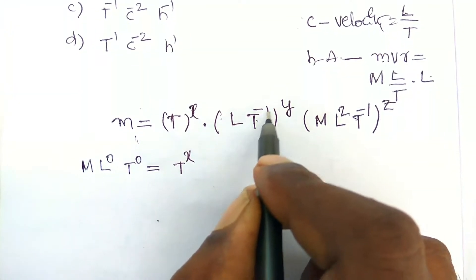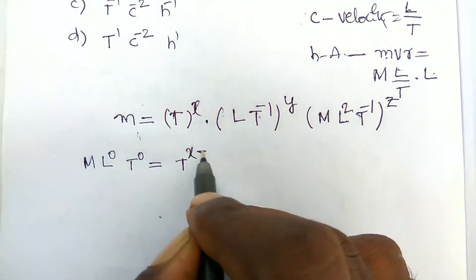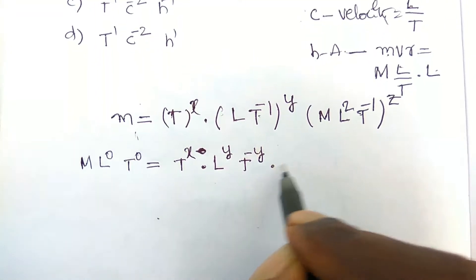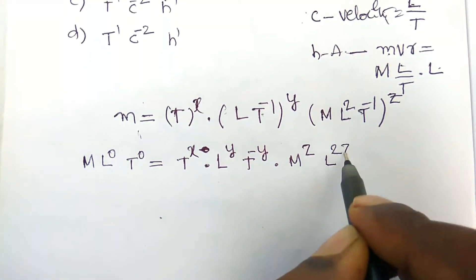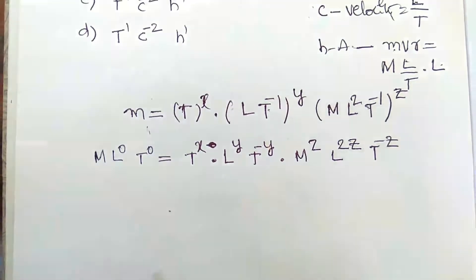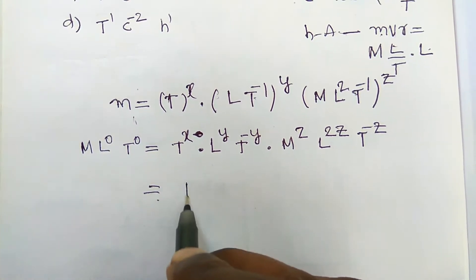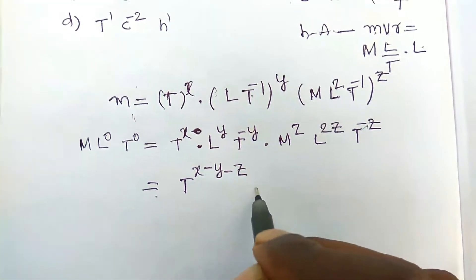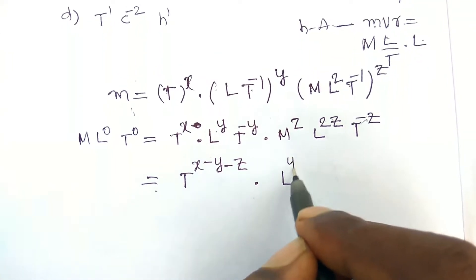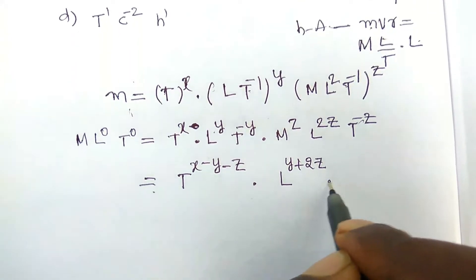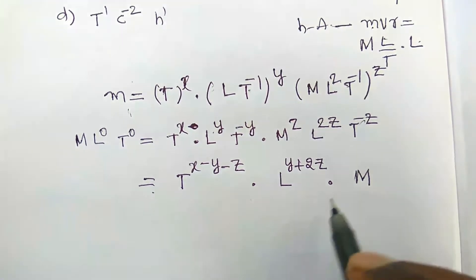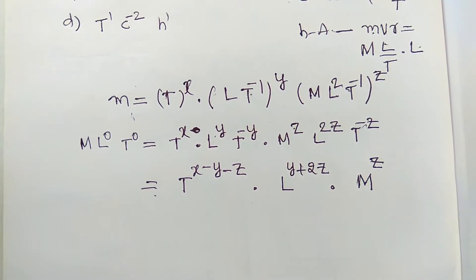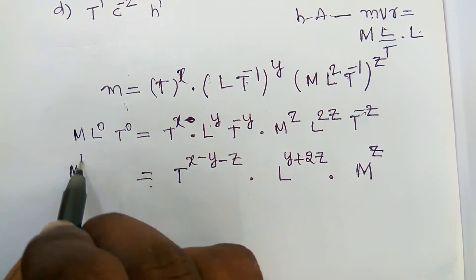Substituting: m = (T)^x · (L·T⁻¹)^y · (M·L²·T⁻¹)^z. On the left-hand side we have M¹·L⁰·T⁰. Expanding the right-hand side: T^x · L^y · T^(−y) · M^z · L^(2z) · T^(−z).